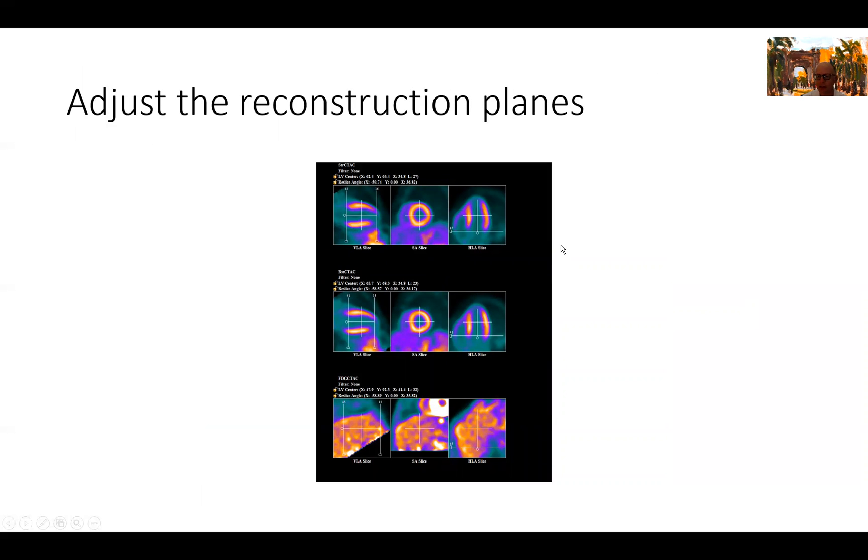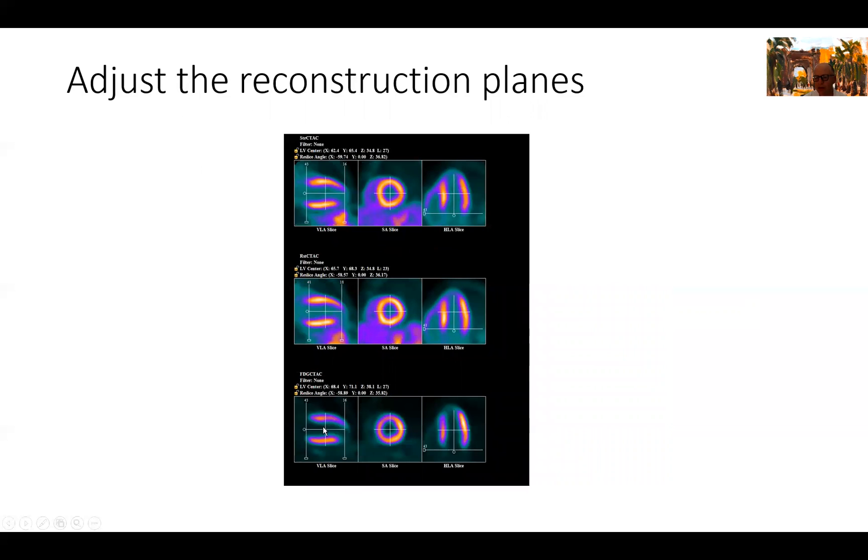Then we go on to the reconstruction planes. You can see here the rest images in the middle, stress images on top. The software detected the heart properly and put the cross in the middle of the heart, the short axis. However, in the FDG images on the bottom, you can see the software detected something else besides the heart. You can see this heart here in the upper right corner, probably over the liver or some other heart tissue there. So we have to adjust this and bring the plane over the heart. Now we have proper registration of the stress, rest in the middle, and the FDG images on the bottom here.